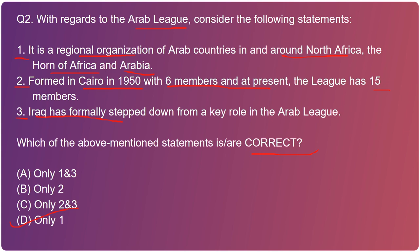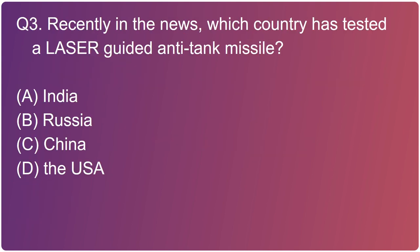The third statement is also incorrect because it is Palestine, not Iraq, that has formally stepped down from a key role in the Arab League. The issue is that the UAE and Bahrain signed deals in Washington on September 15th, which drew criticism from the Palestinians, and it has been seen as a serious blow to their efforts to end the illegal Israeli occupation and achieve an independent state.